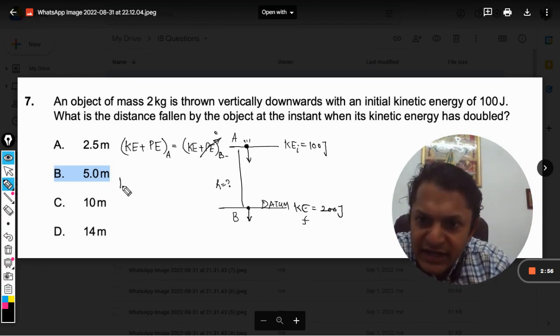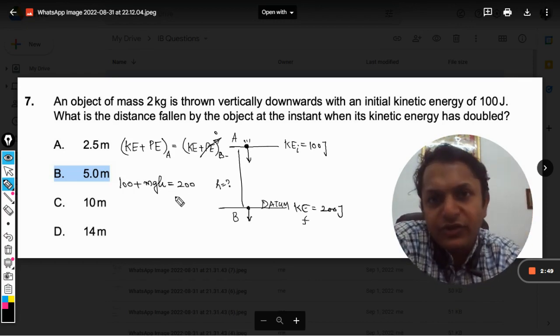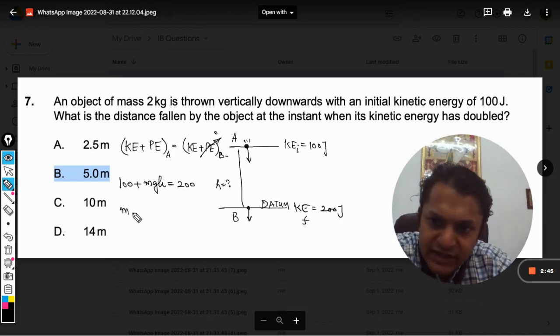So what is the kinetic energy? 100. And what is the potential energy? MGH. And what is the final kinetic energy? That is 200. Very simple equation, and from here we will find H.